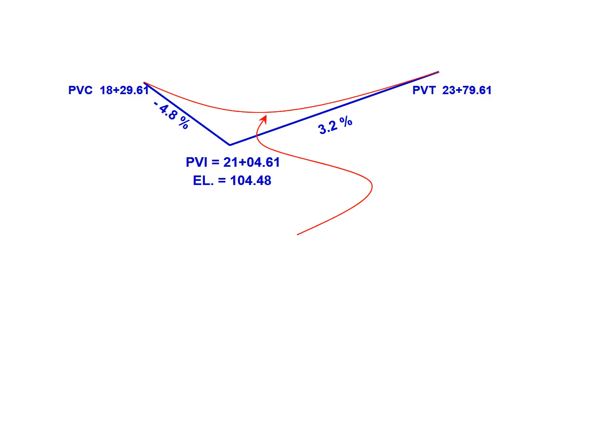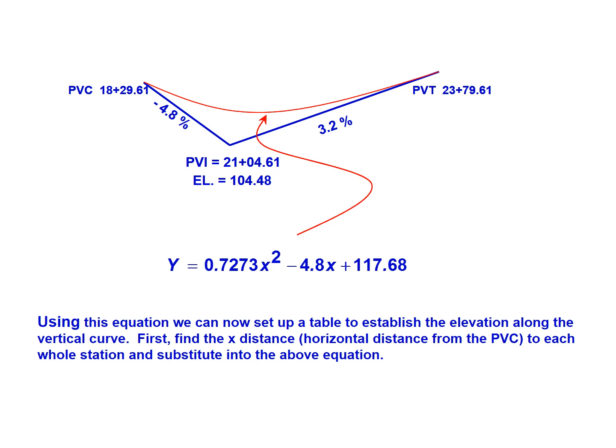So we've got our vertical curve that ties in the two grades, g1 and g2, as a smooth transition. This curve is defined by our parabolic equation where y equals 0.7273x squared minus 4.8x plus 117.68. We're going to use this equation going forward.